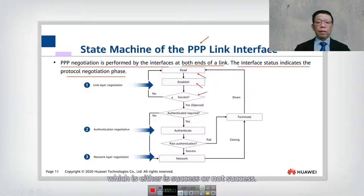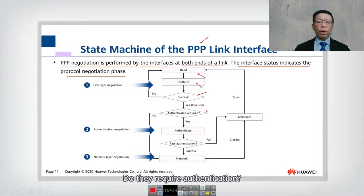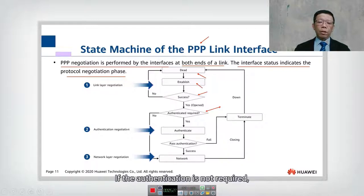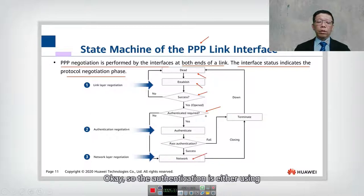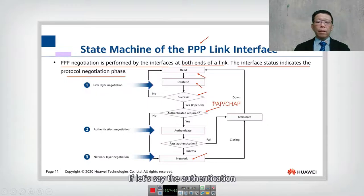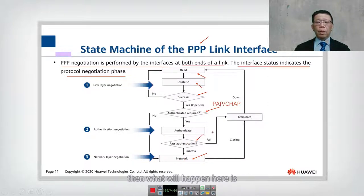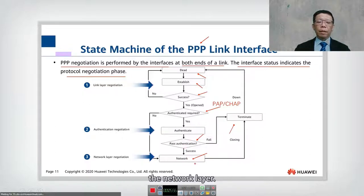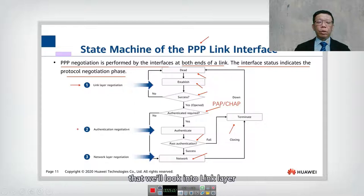During LCP negotiation, if successful, they proceed to the second stage: authentication. If authentication is required, you must authenticate using PAP or CHAP. If authentication is not required, the process moves directly to the network layer. If authentication fails, the connection is terminated. Assuming authentication is successful, the process moves to the network layer, where the IP Control Protocol (IPCP) negotiates. These are the three processes: link layer negotiation, optional authentication, and network layer negotiation.